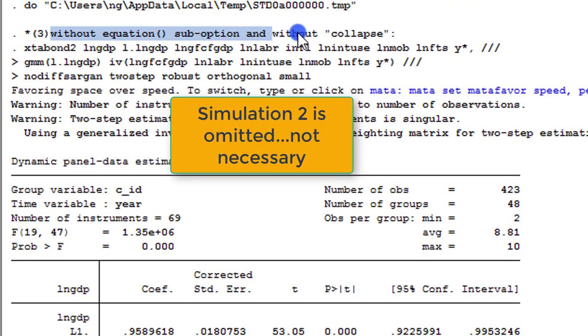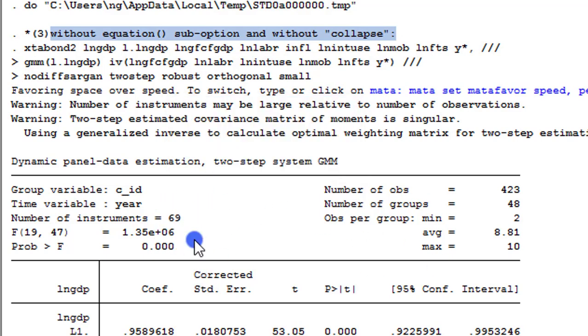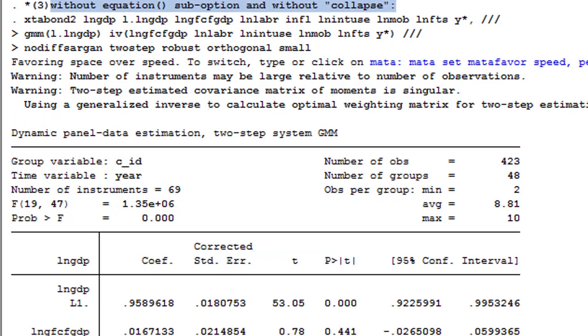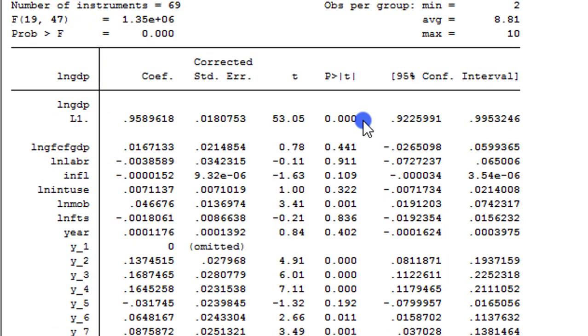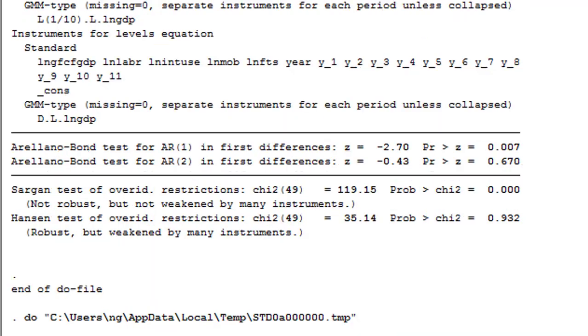The third simulation is without the equation sub-option and the collapse option. And here we have our results. Without the collapse option, number of instruments is higher than the number of groups. The lagged dependent variable is still significant at 1%. Mobile has also improved on significance to 1%. Like I said, if you compare with what you have on that one-step system, Hansen is exactly the same.